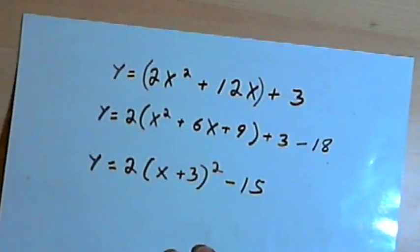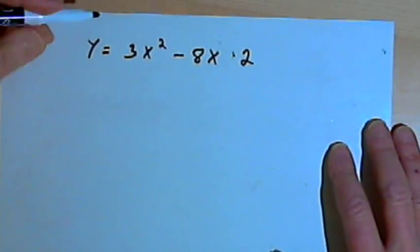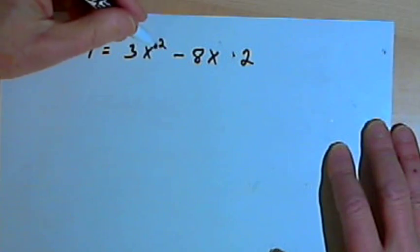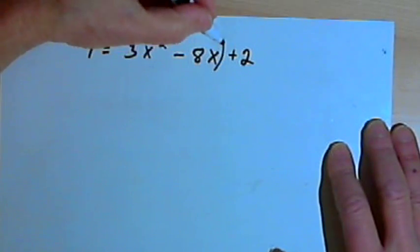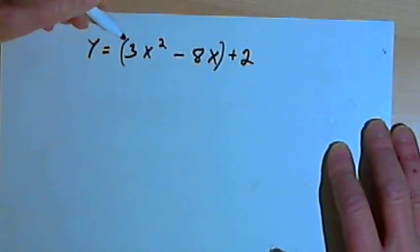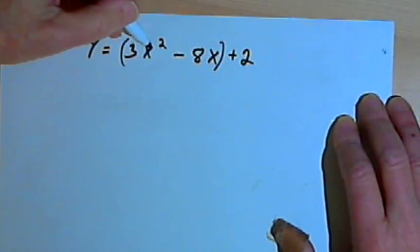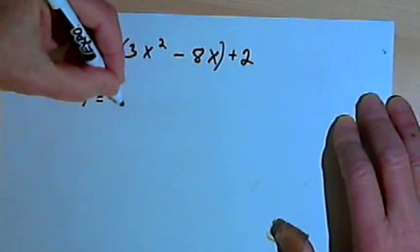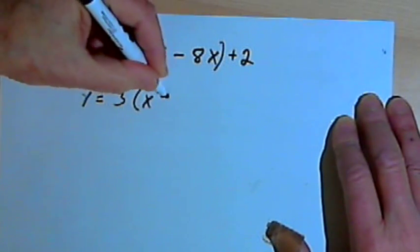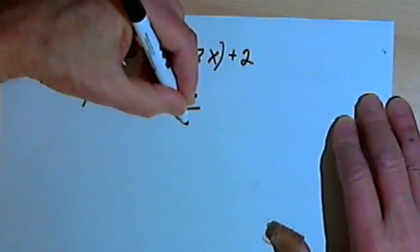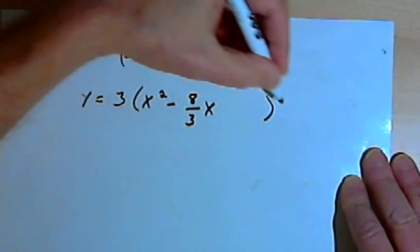Sometimes you're going to end up with fractions you have to deal with, so let's do a slightly harder one. The approach is going to be exactly the same. I've got y equals 3x squared minus 8x plus 2. I'll put parentheses around the first two terms, and I want to factor out a 3 so that my coefficient for the first term is just 1. I'll have y equals 3 times the expression x squared minus 8 over 3 x, leave some room, close the parentheses, plus 2.